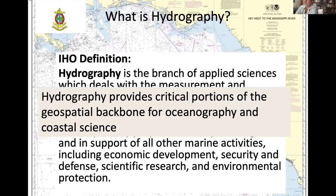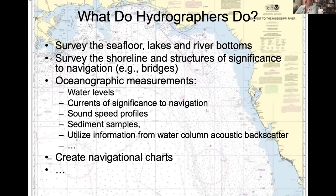Hydrography provides critical portions of the geospatial backbone for oceanography and coastal science. Hydrographers survey the seafloor, lakes, and river bottoms. They survey the shoreline and structures of significance to navigation, such as bridges. They take oceanographic measurements including water levels, currents, sound speed profiles, and sediment samples. They utilize information from water column acoustic backscatter and many other types of measurements. They also create navigational charts.